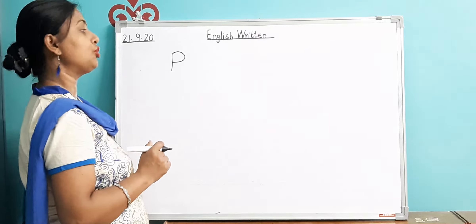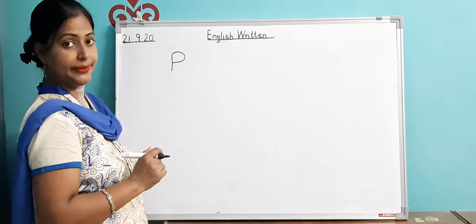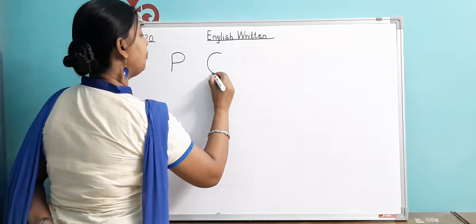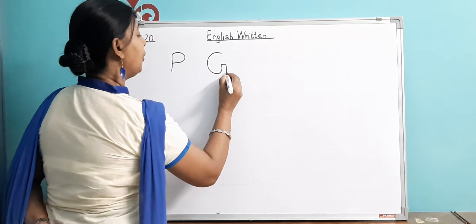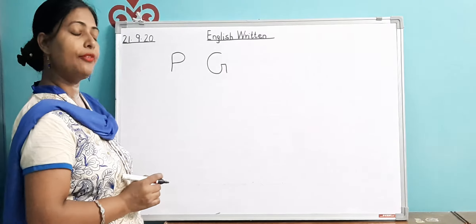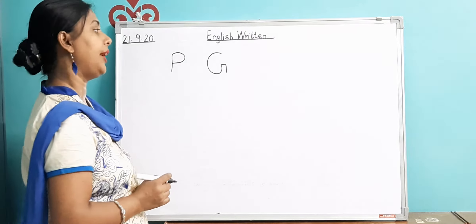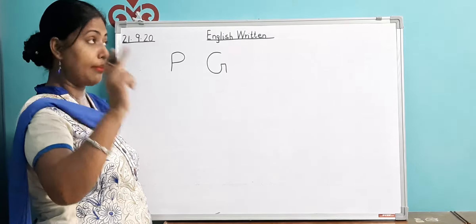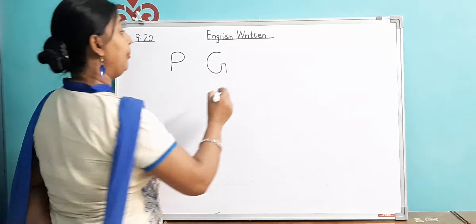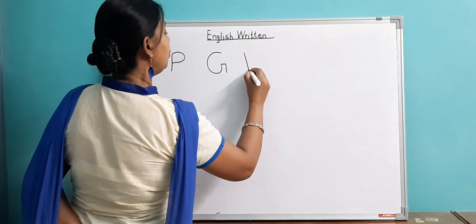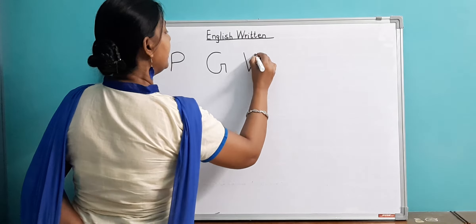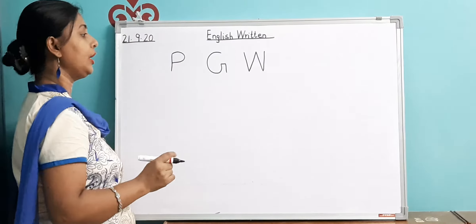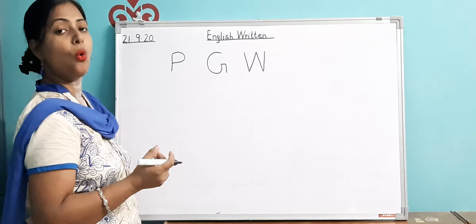If I ask you to write alphabet G — G for glass — you will quickly write it like this. Now if I ask you to write W for watch, you should remember how to write W: slant line down, slant line up, slant line down, slant line up. If I say write I for India — standing line and sleeping line and sleeping line — that is how you write I.